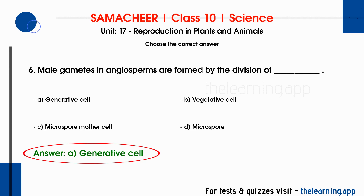Male gametes in angiosperms are formed by the division of the generative cell. The pollen grain contains a vegetative cell which converts into a generative cell. The generative cell divides to produce two sperm cells. These two sperm cells are haploid, containing 23 chromosomes. The female reproductive part produces the egg, and fertilization forms a diploid zygote.